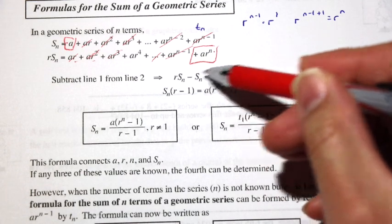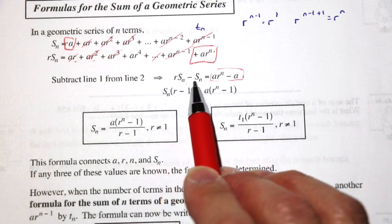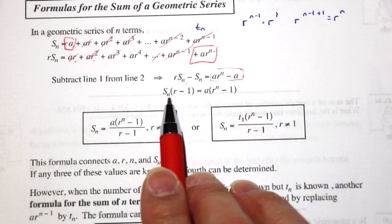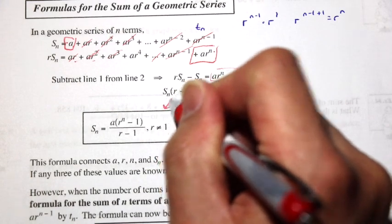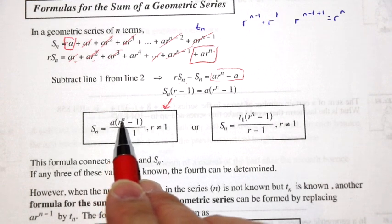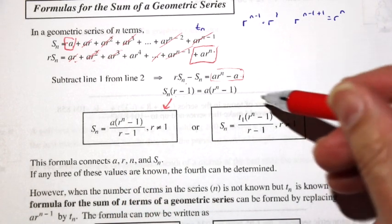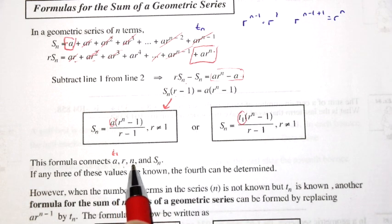If you do that, then you can factor: Sn multiplied by r minus 1. You can see this is the first r times Sn, and minus 1 times Sn is negative Sn. You can factor out the a here. So now we have Sn times (r minus 1) is equal to a times (r to the n minus 1). When you divide both sides by r minus 1, you get the formula: Sn equals a times bracket (r to the n minus 1) divided by (r minus 1). This formula connects a (the first term, or t1), r (the common ratio), n (the number of terms), and Sn. If any three of these values are known, the fourth can be determined.